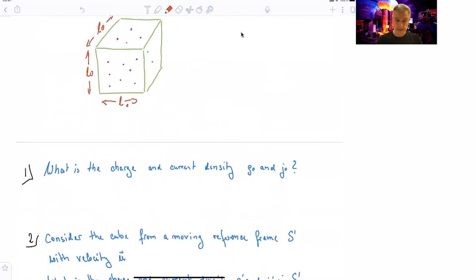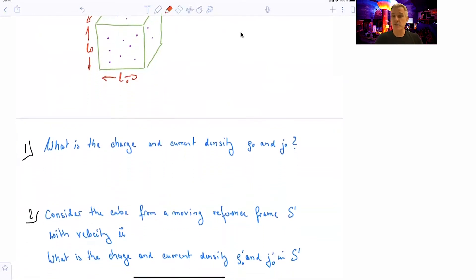And as a second step, as you can imagine, I ask you to consider the very same thing from a moving reference frame s prime, with some velocity u, which is the velocity of s prime with respect to s. What is the charge and the current density now in this new reference frame? I'd like you to figure this out.